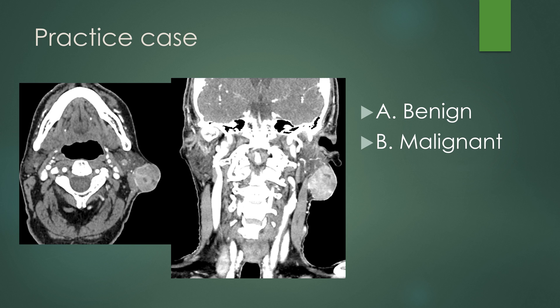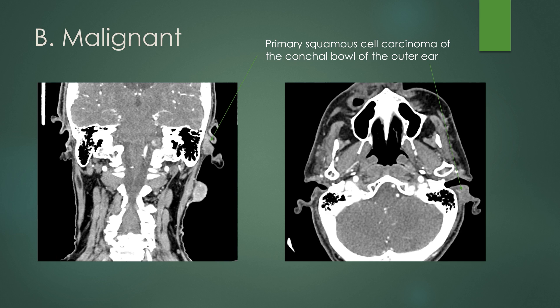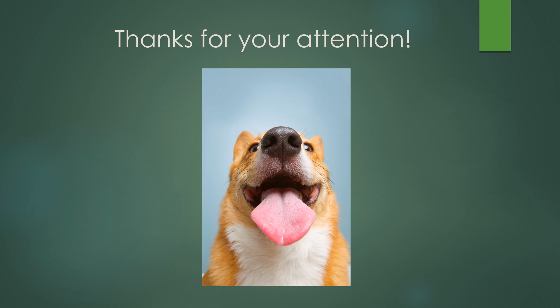For a practice case, you have this lesion in the superficial lobe of the left parotid gland. Based on the CT features, do you favor it being benign or malignant? The correct answer is malignant. If you look at the images, there is a primary squamous cell carcinoma of the conchal bowl of the outer ear, and these were metastatic deposits including in the left parotid gland. Here's the primary cancer, and here is another metastatic lesion. Thank you for your attention.